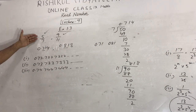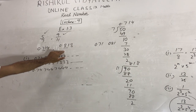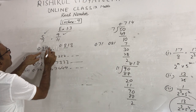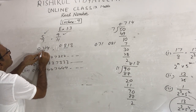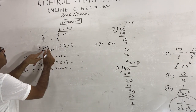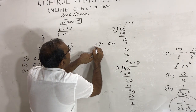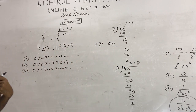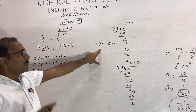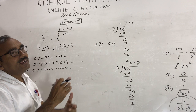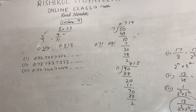First convert to decimal form, then identify the numbers between point 71 and point 81 — for example, 0.71, 0.72, 0.73, 0.74 up to 0.80 — and construct non-terminating, non-repeating decimals within that range.